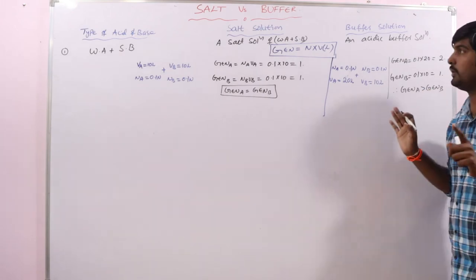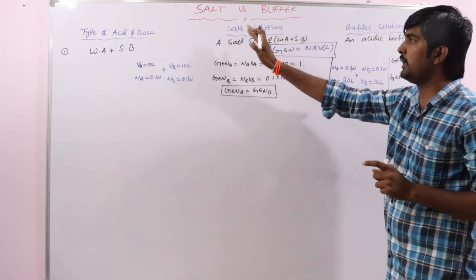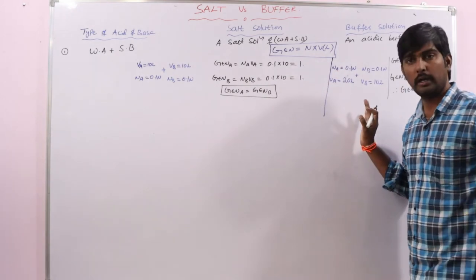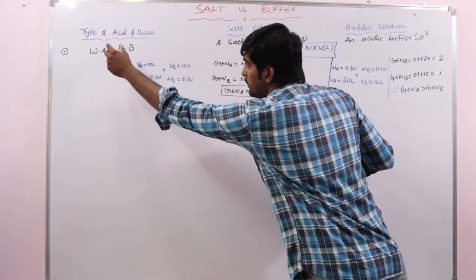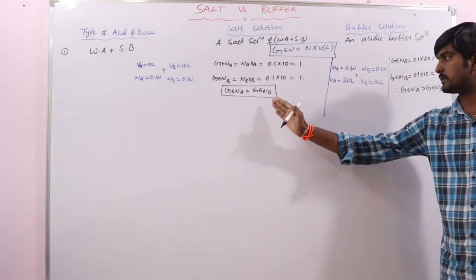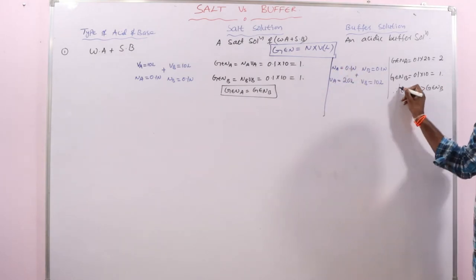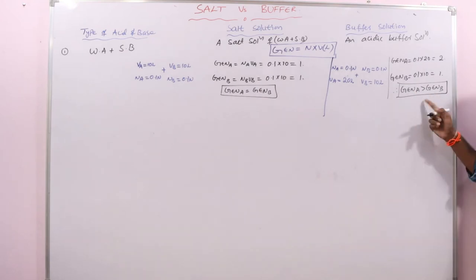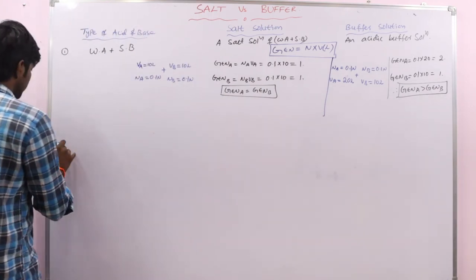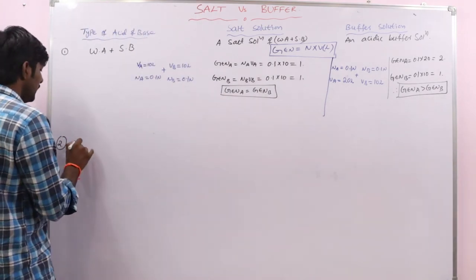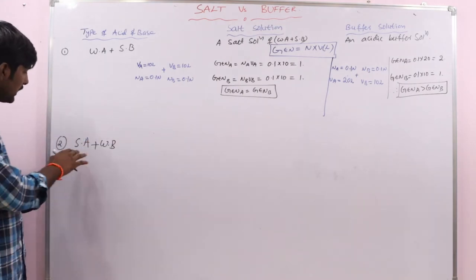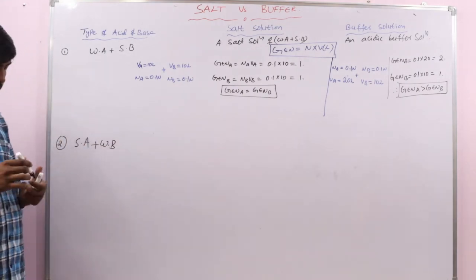Remember, right now we are discussing only the difference between a buffer solution and a salt solution; other cases will be discussed in other classes. So to summarize: whenever weak acid plus strong base are provided, if equivalences are equal a salt is formed, and if GEN of acid is greater than GEN of base, an acidic buffer is formed. Now let us discuss the second case: when a strong acid plus weak base mixture is provided.